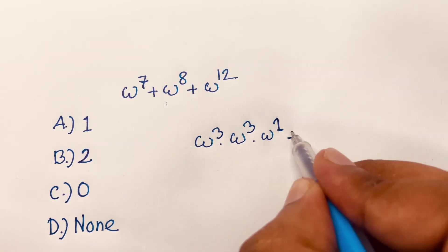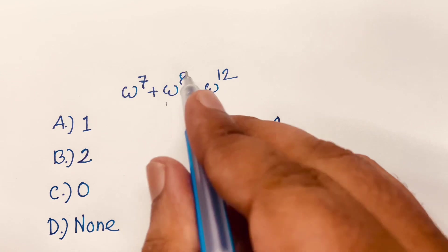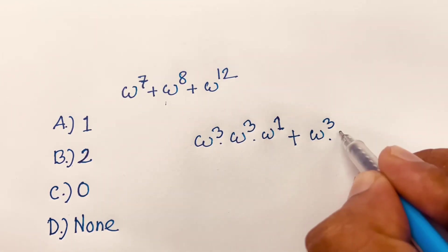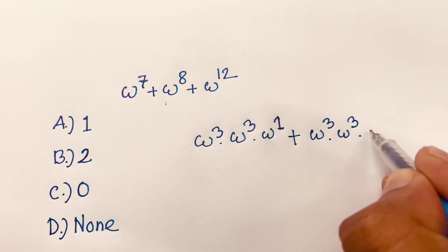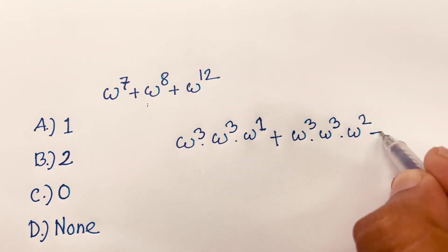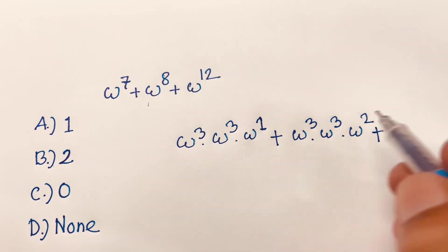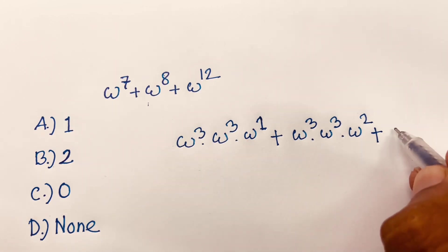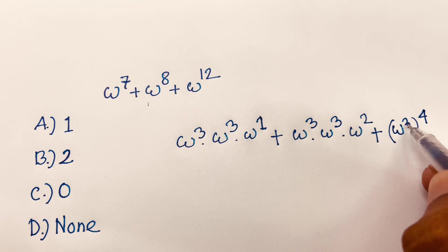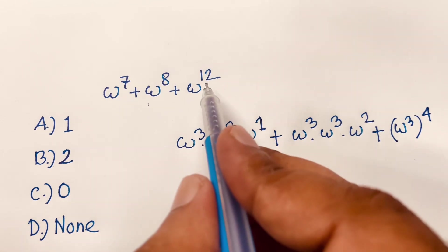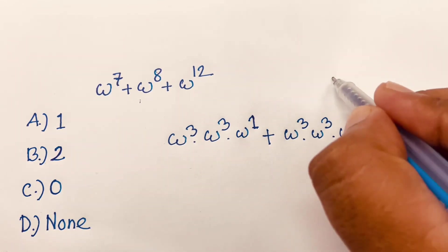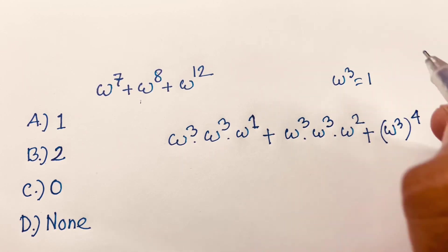Omega power 8 is written as omega power 3 times omega power 3 times omega power 2. And omega power 12 is omega power 3 raised to the power of 4, since 3 times 4 equals 12. Now, we know that omega power 3 equals 1.